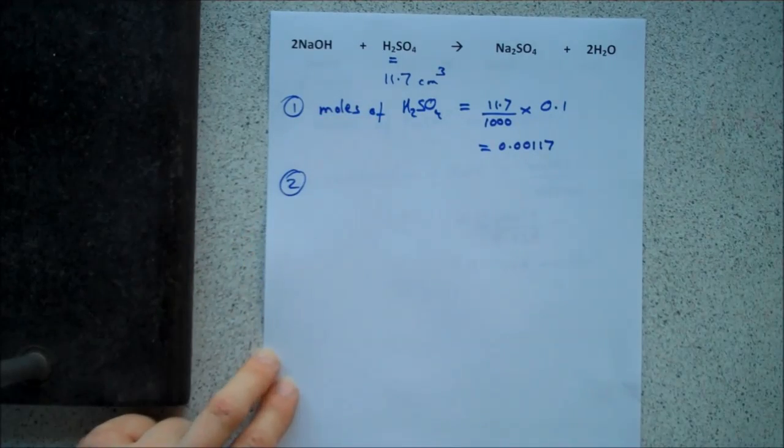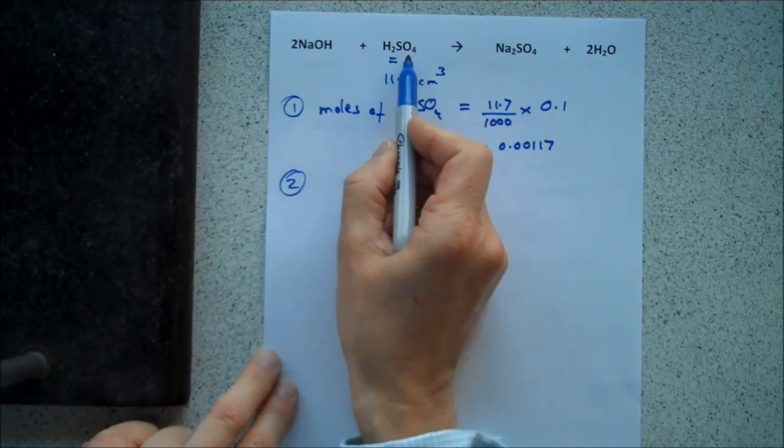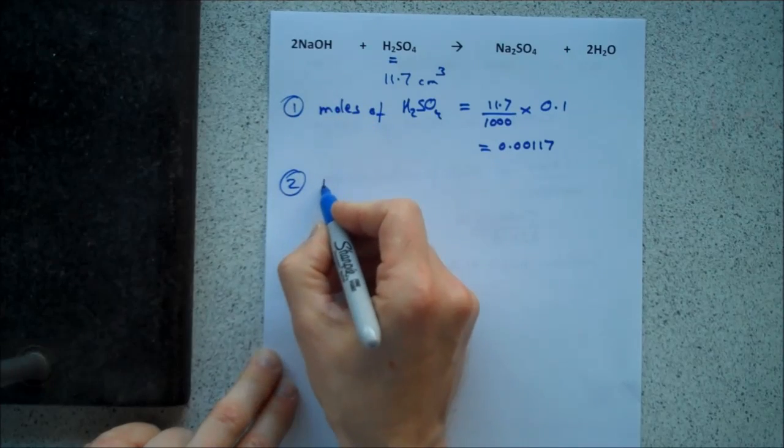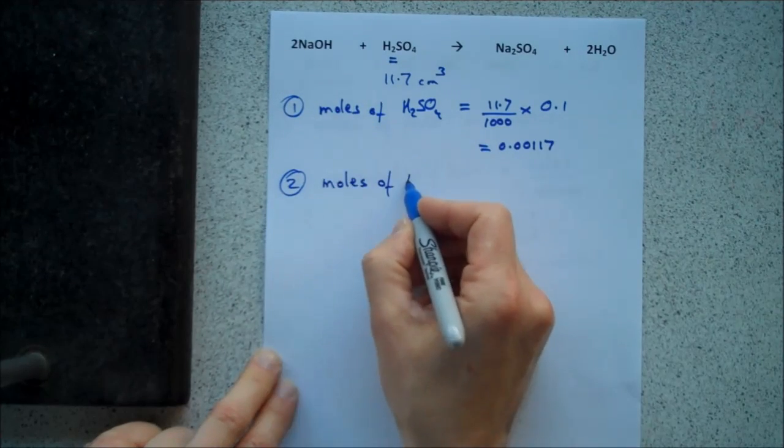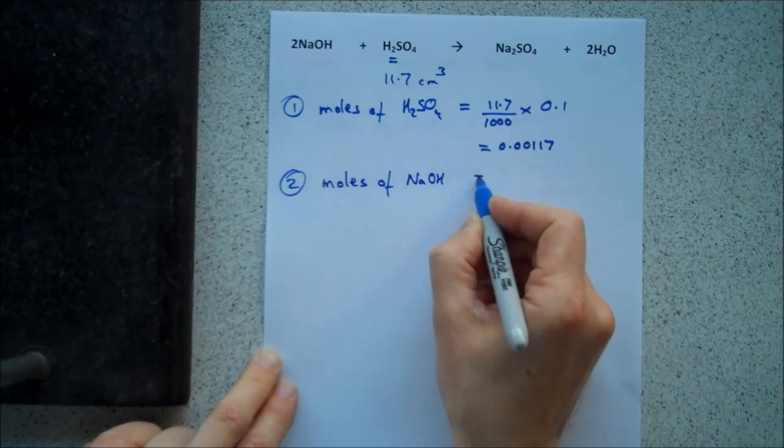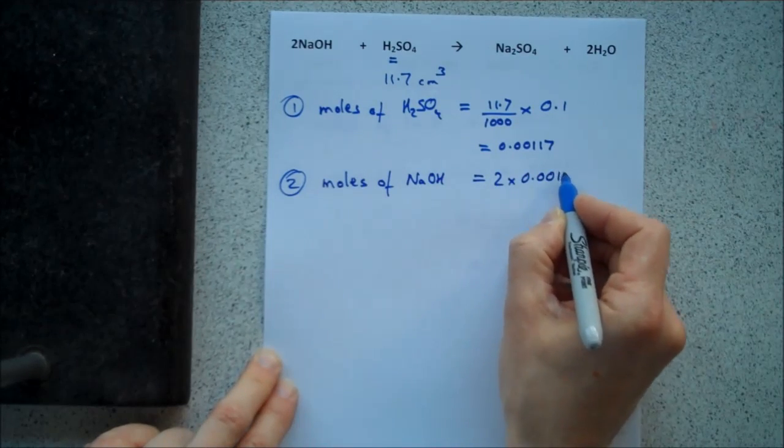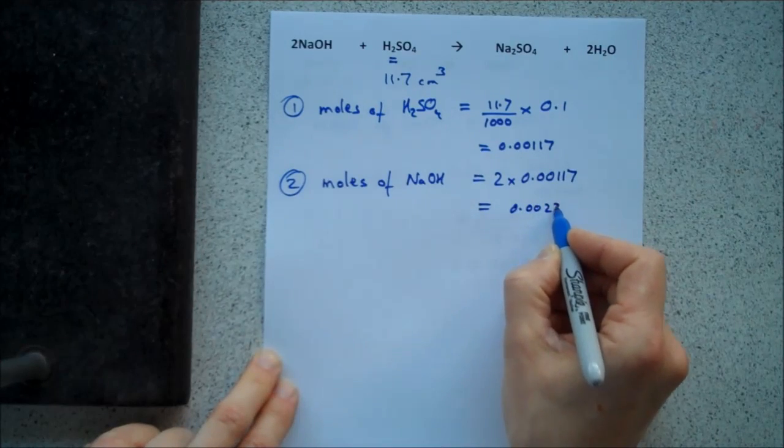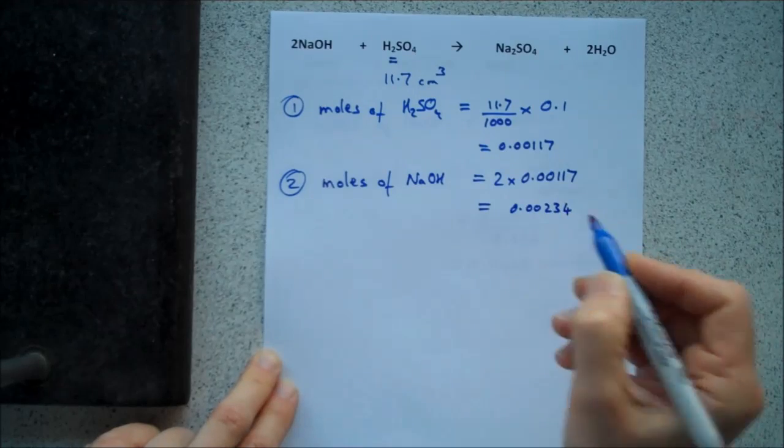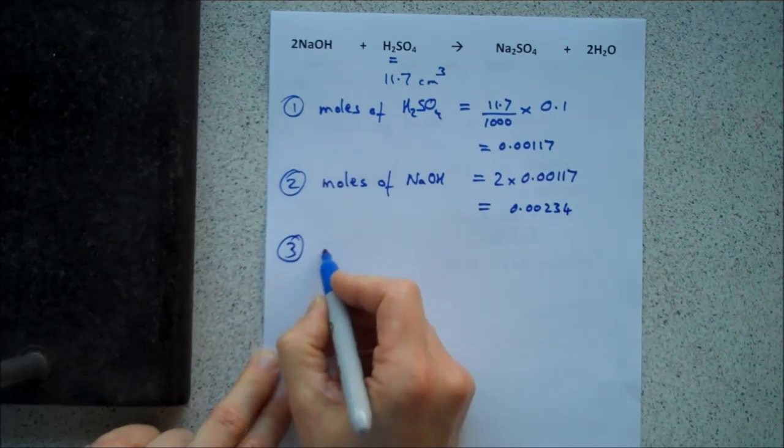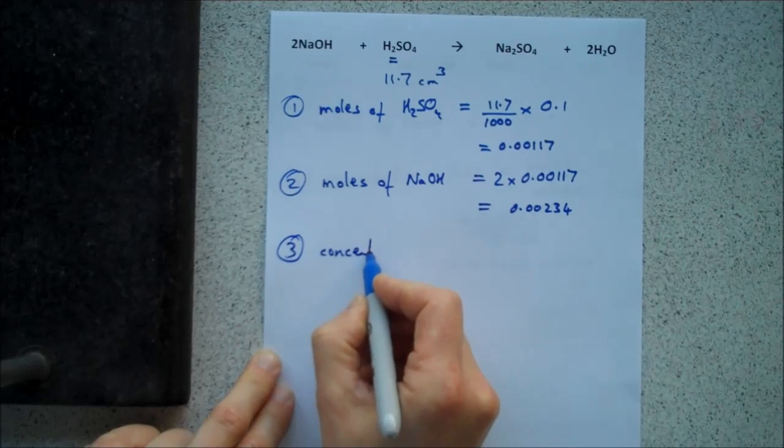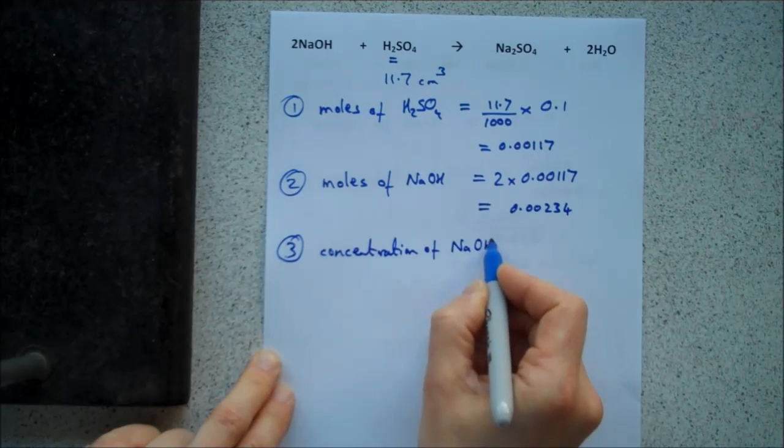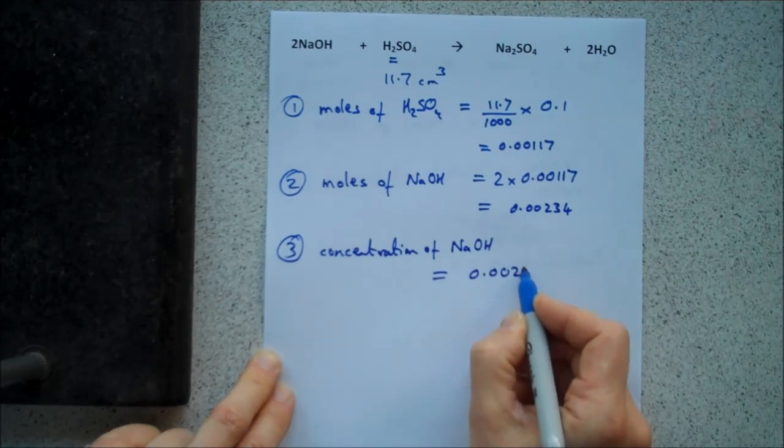Step two, however, is different because each mole of sulfuric acid can neutralize two moles of sodium hydroxide. So step two, from our balanced equation, moles of NaOH is 2 times 0.00117, which is 0.00234. So then, when we work out our concentration of NaOH, we have twice as many moles, 0.00234.